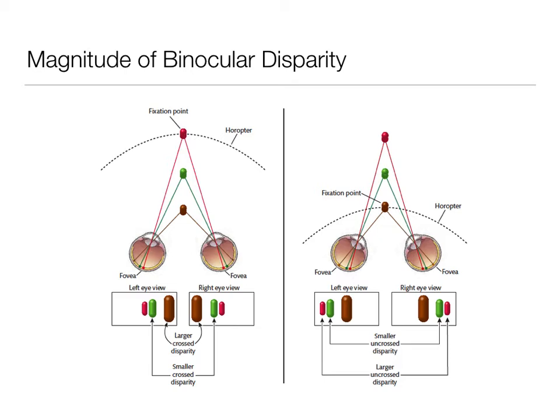The image on the right shows uncrossed disparity. Here we have our fixation point — this time it's the brown. We're focusing on the closest one, and the uncrossed disparity are the images that are farther, the objects that are farther than fixation. So when we have the larger uncrossed disparity, that's going to be the furthest object away, where the smaller uncrossed disparity is going to be closer to fixation. But both of these are further away than what we're fixating on.